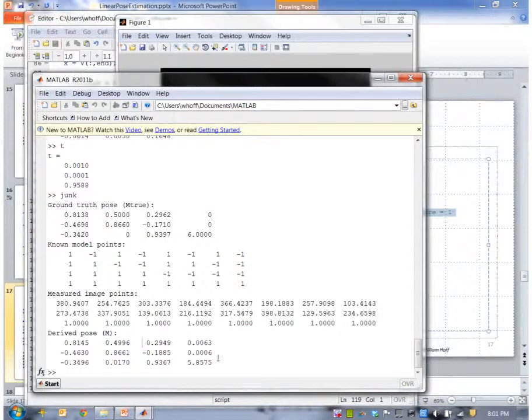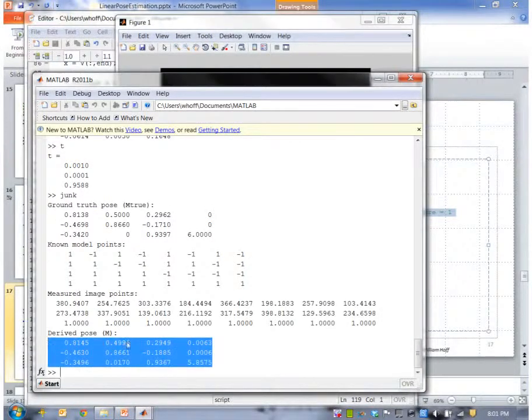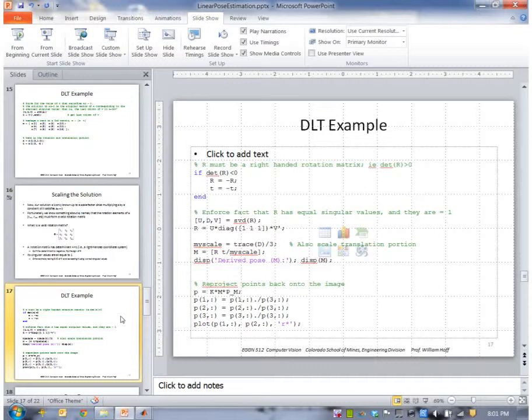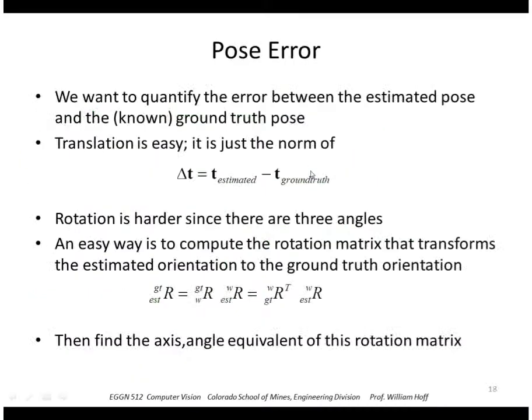So if we look at the derived pose, here it is. So again, this 3 by 3 is the rotation matrix and here is our translation. Alright, so let's go ahead and figure out the error.